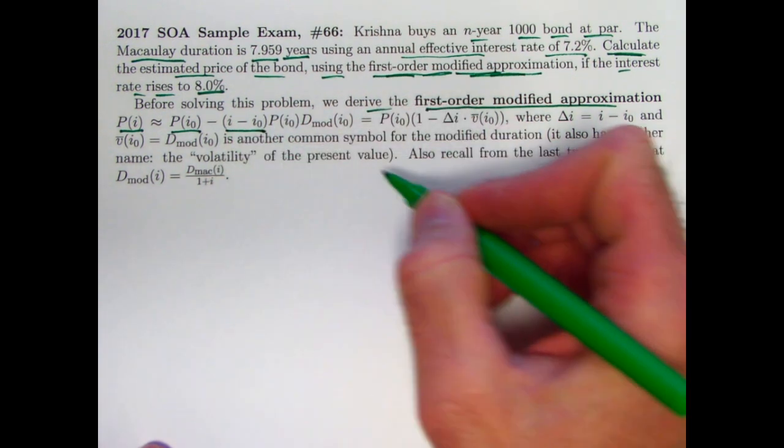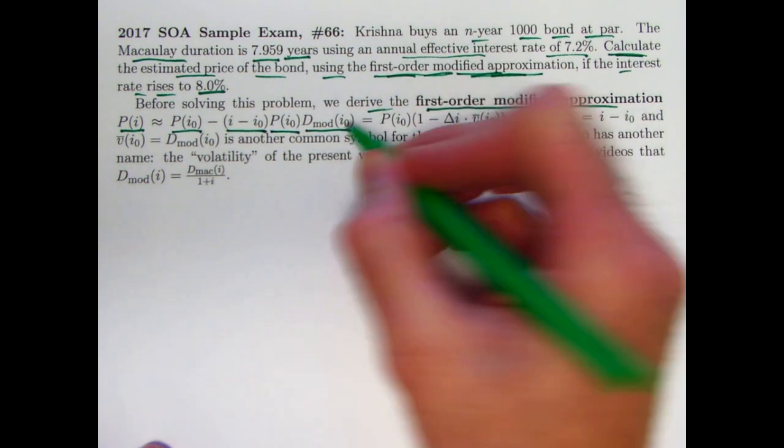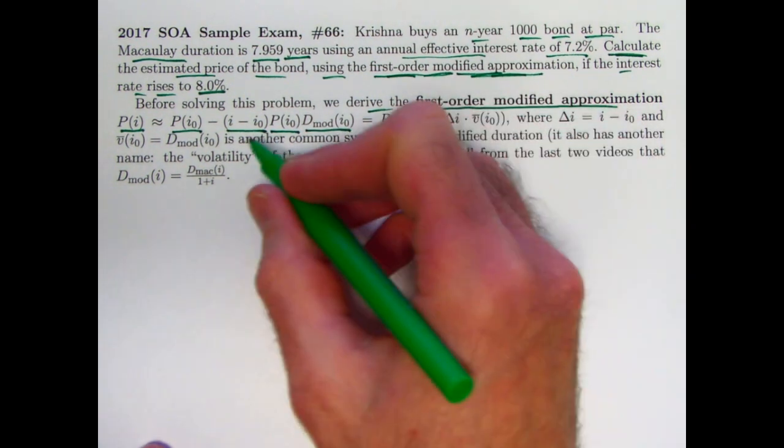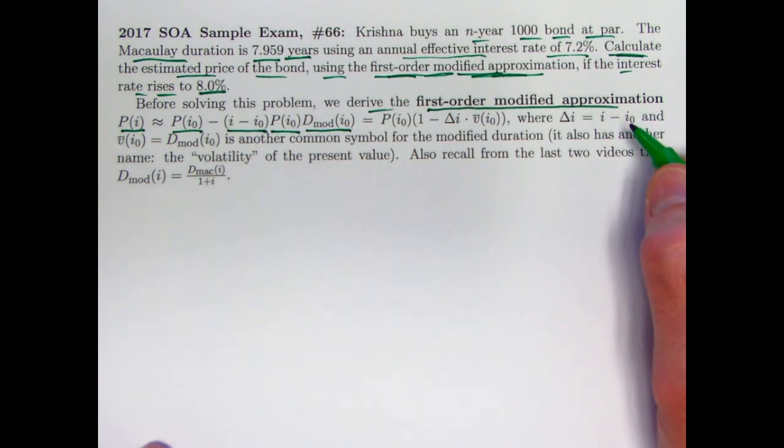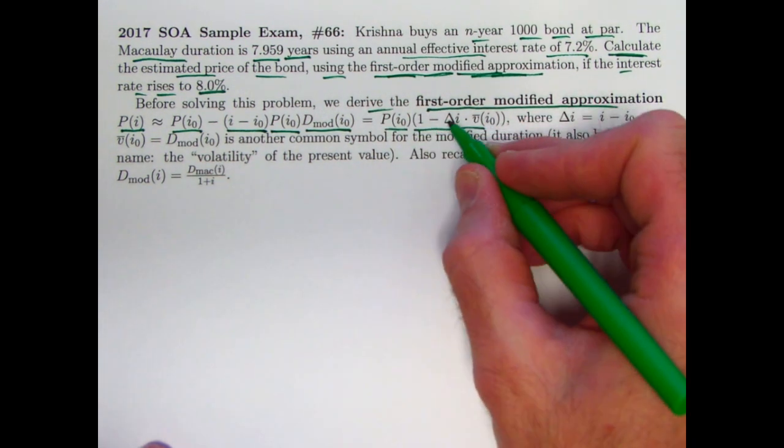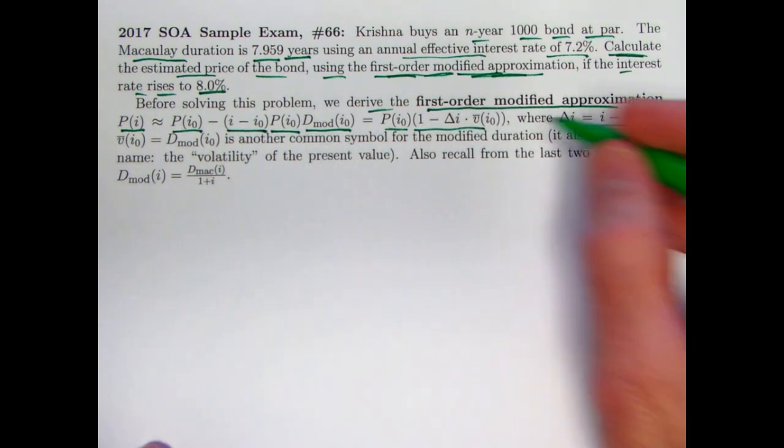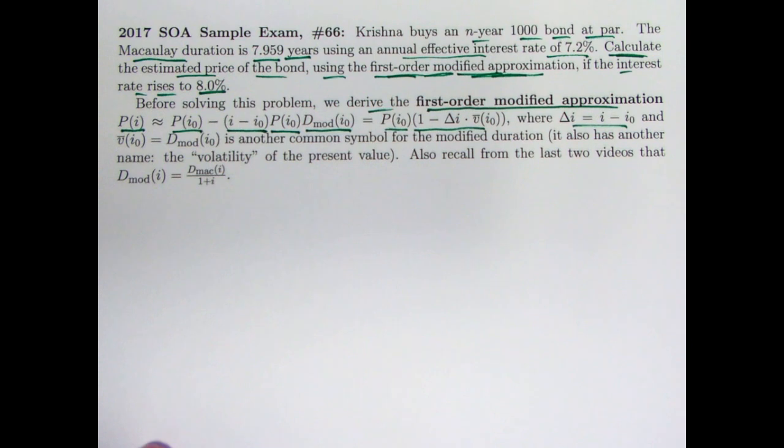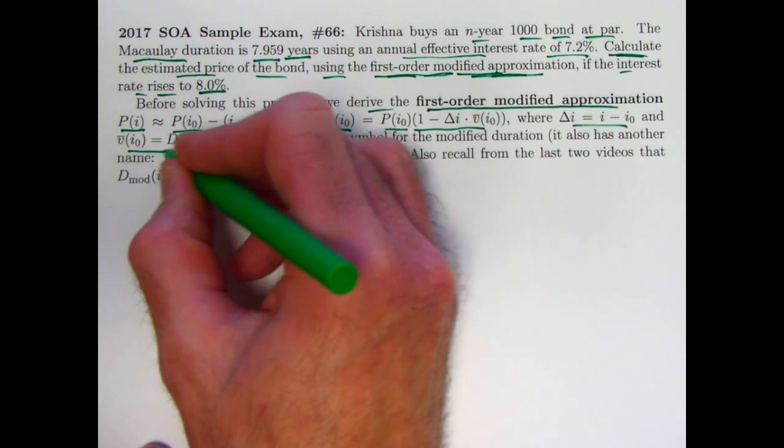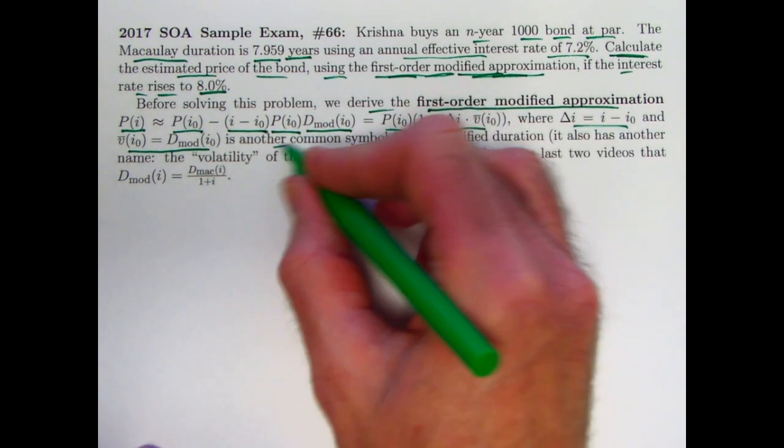Times the current price, times the modified duration. Of course, we could also see that there's a common factor of P(i0) in there that could be factored out like this, and multiplied by 1 minus delta i, where delta i represents i minus i0, times, here's another notation for the modified duration, V bar of i0. That's just another notation for the modified duration, another common symbol.